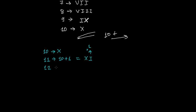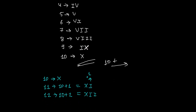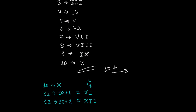For 12, I need to write 10 plus 2. Ten is X, and 2 is two I's together, so 12 is XII. For 13, I add 3 — which is three I's — to X, giving XIII, since 13 is 10 plus 3. So we have XI for 11, XII for 12, and XIII for 13.